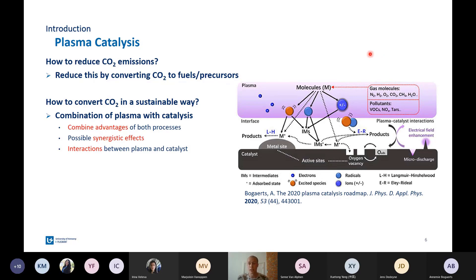Plasma is a very complex mixture. As you can see on the slide, it exists out of electrons, ions, molecules, radicals, and all these plasma species affect the catalysts, and catalysts can also affect the plasma, for example, by enhancing the electric fields.